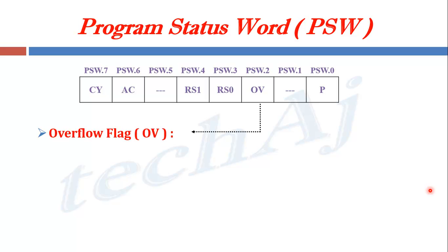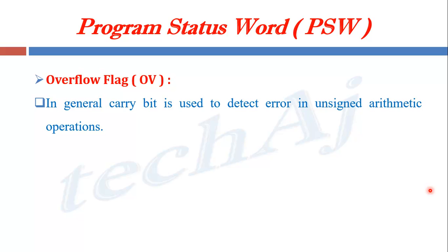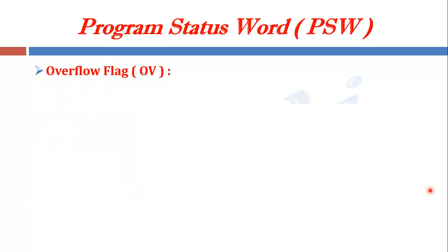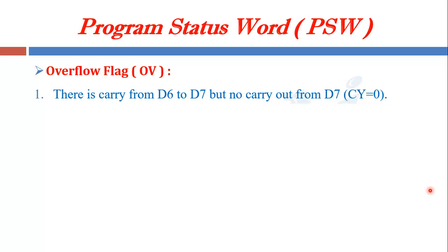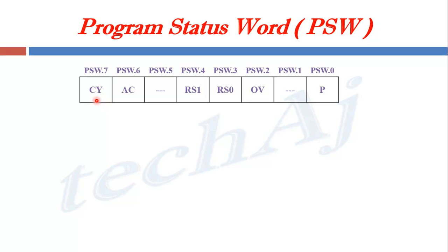The next bit is the overflow flag. This flag is set to 1 whenever the result of a signed number operation is too large, causing the higher-order bit to overflow into the sign bit. In general, the carry bit is used to detect errors in unsigned arithmetic operations, while the overflow flag is used to detect errors in signed arithmetic operations. This flag is set in either of two conditions: first, there is a carry from D6 to D7 but no carry out from D7; or second, there is a carry out from D7 but no carry from D6 to D7. In these two cases, the overflow flag is set to 1.